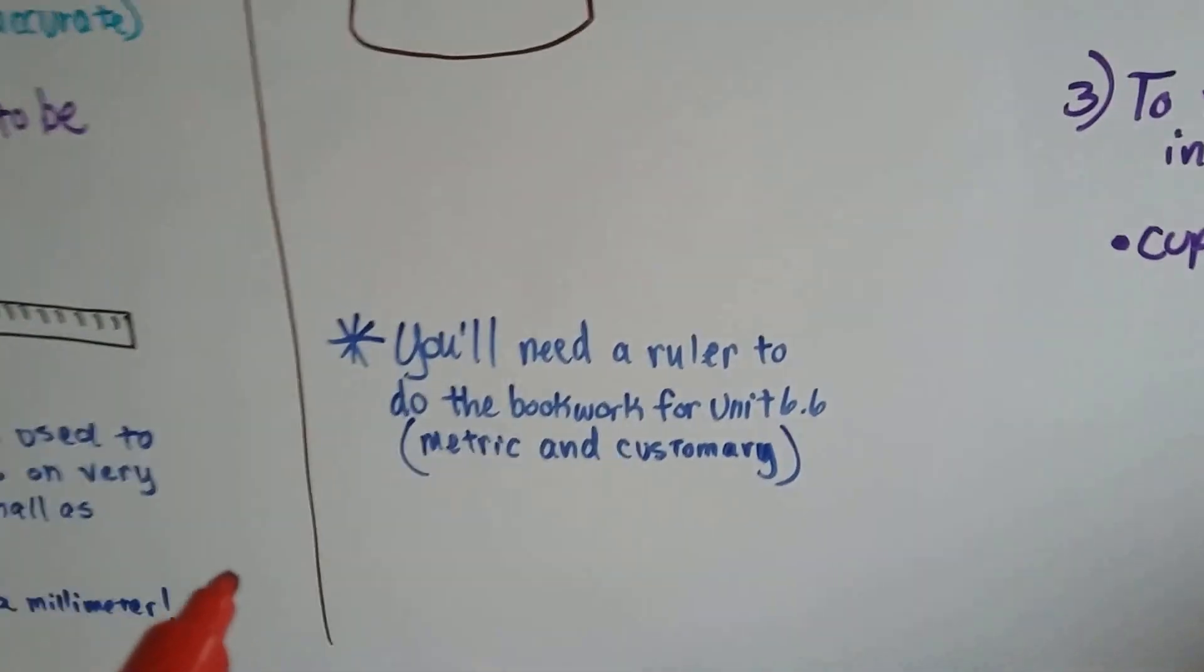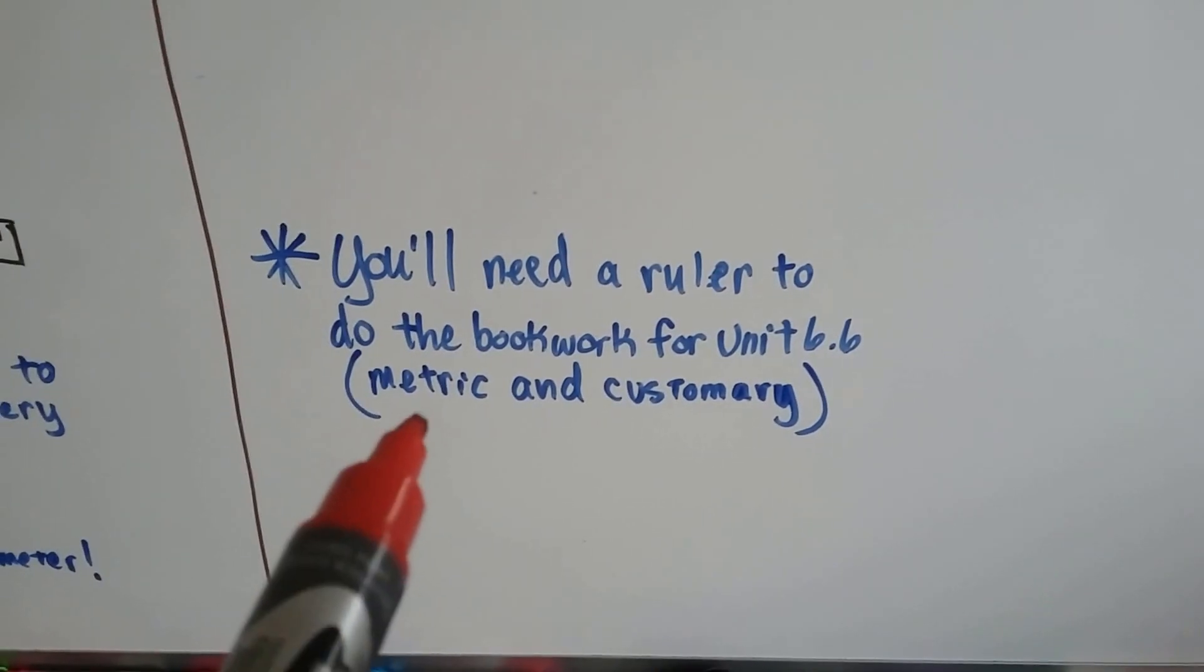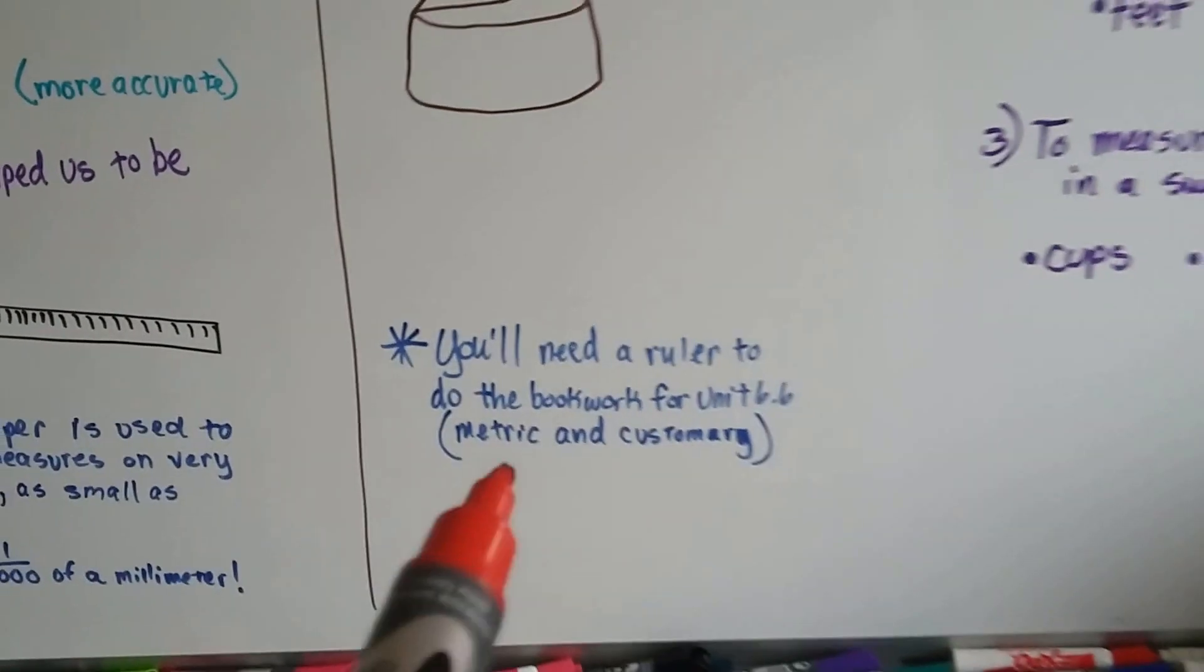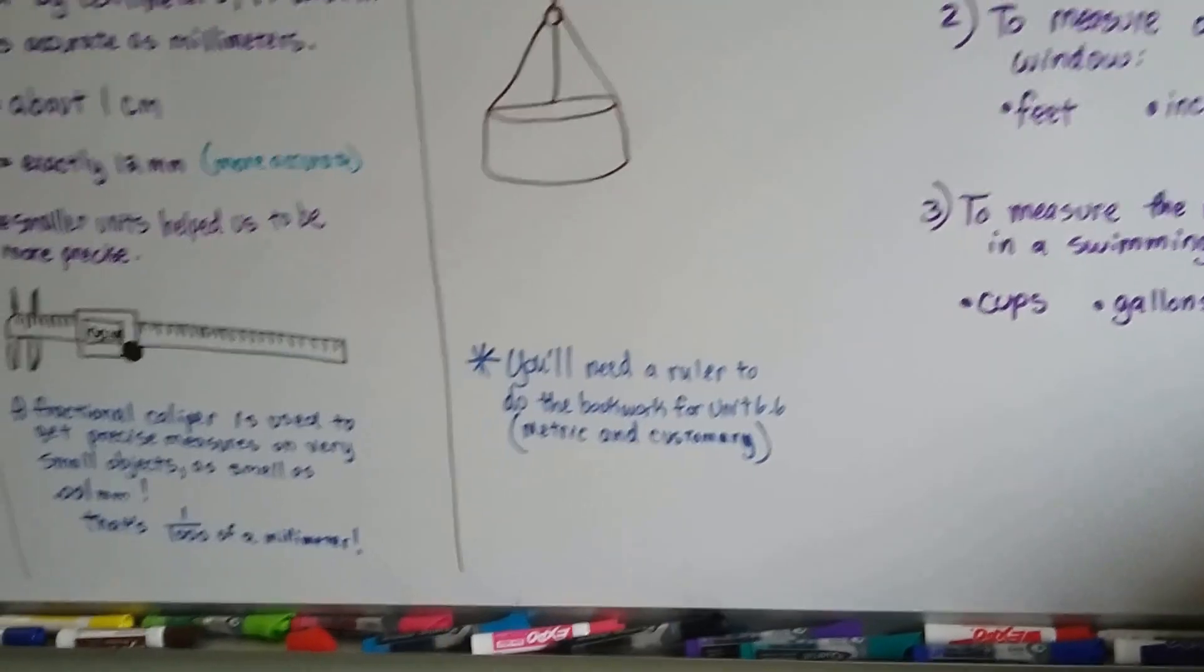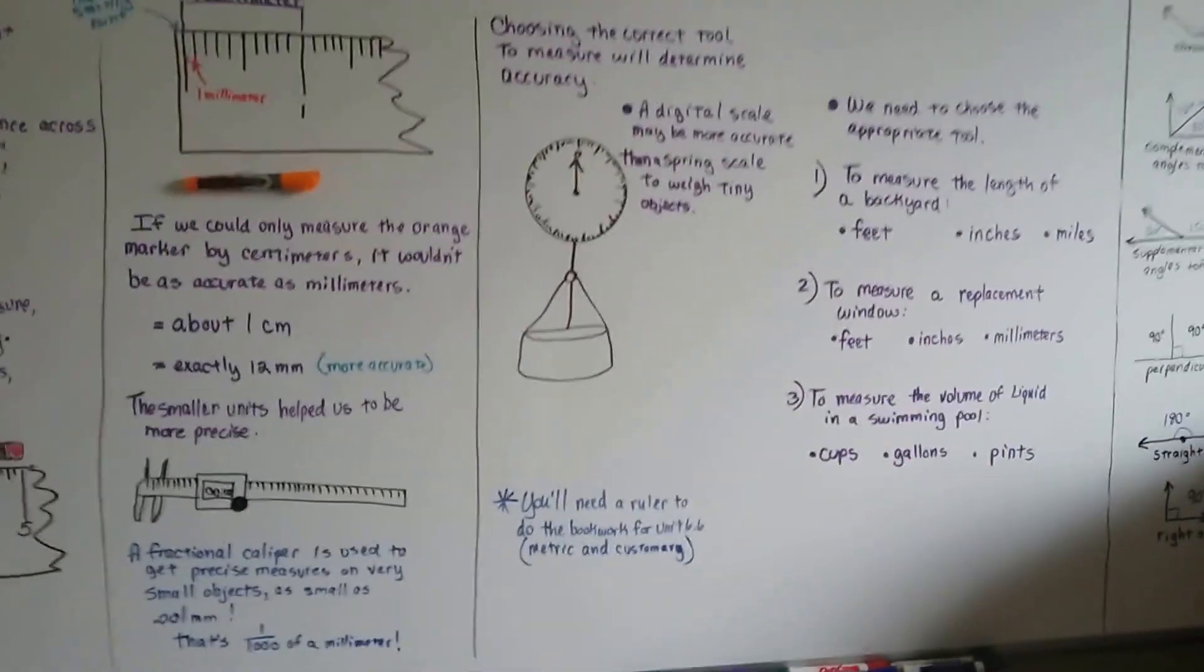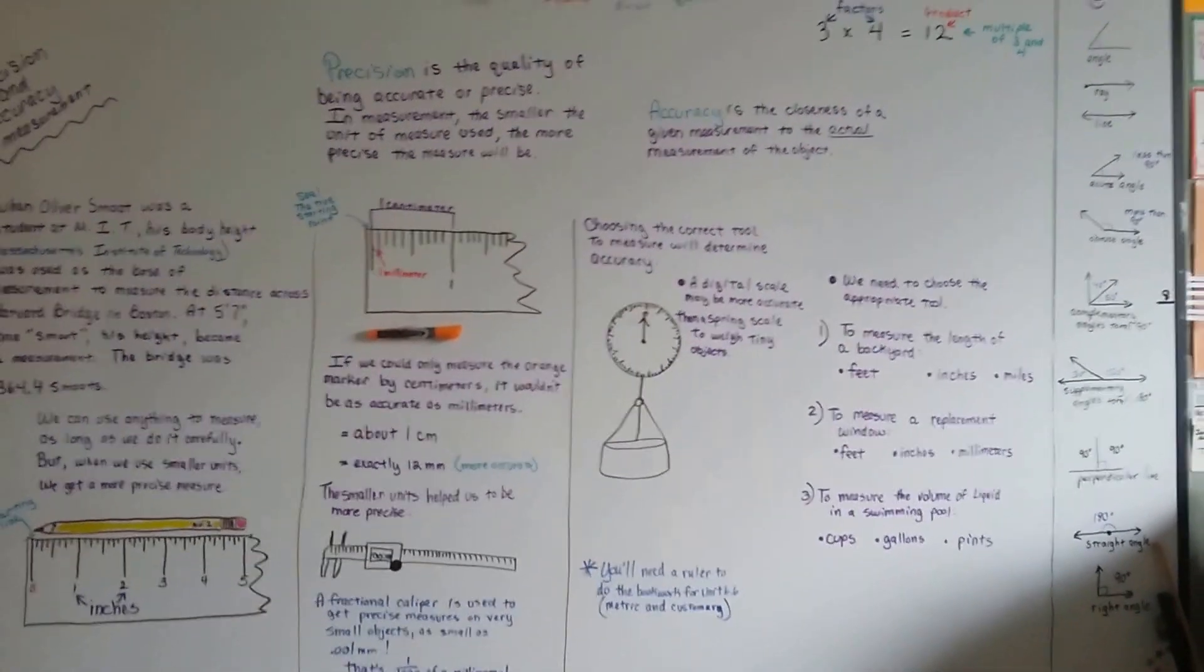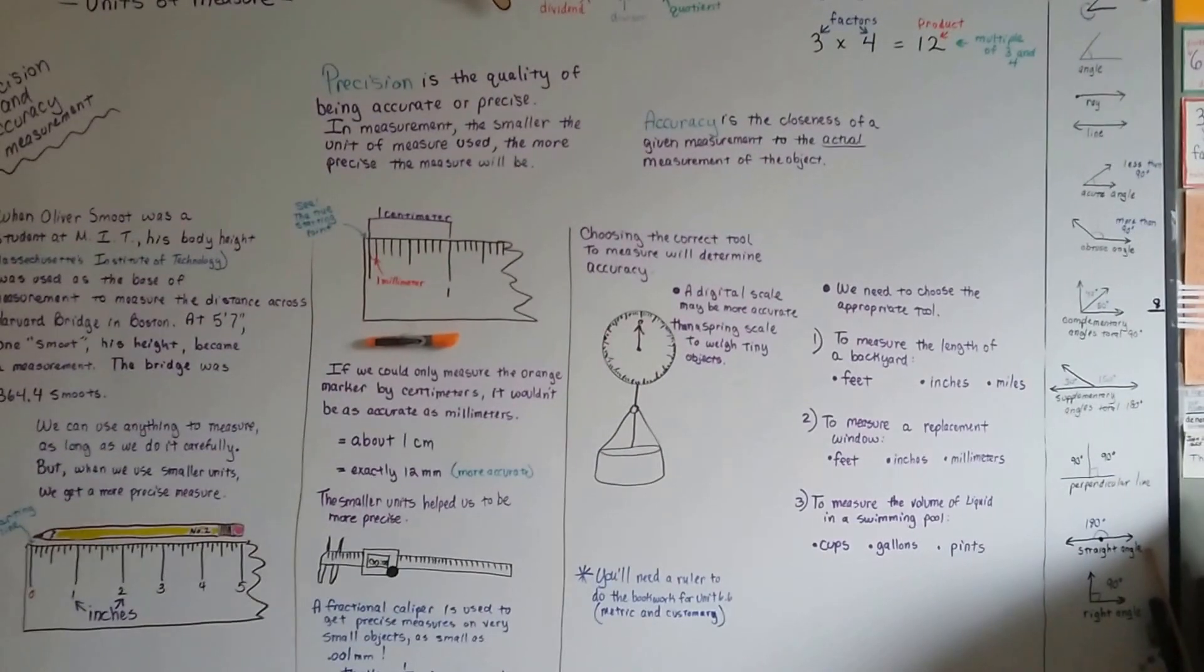Now, I want to let you know that you're going to need a ruler to do the book work. For Unit 6.6, you're going to need a metric and customary measure ruler for the book work. It's got things in there that it wants you to measure in centimeters and millimeters and inches. So see if you can dig one up before you do the schoolwork.